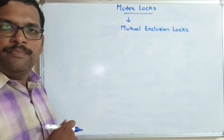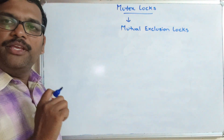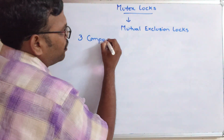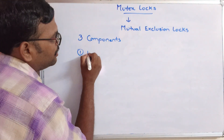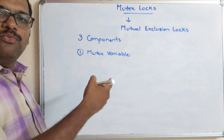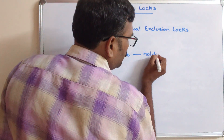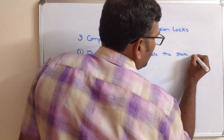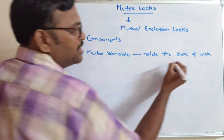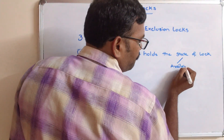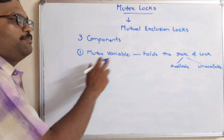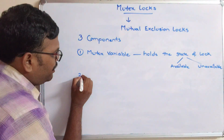Mutex locks use three components. The first one is the mutex variable. The name itself indicates this is a variable which holds the state of the lock — that means whether the lock is available or unavailable.